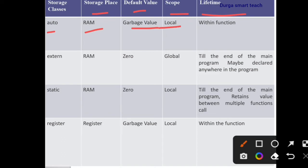The scope of automatic variables is local. You can access these variables only within the function or block. The lifetime is also within the function or block.